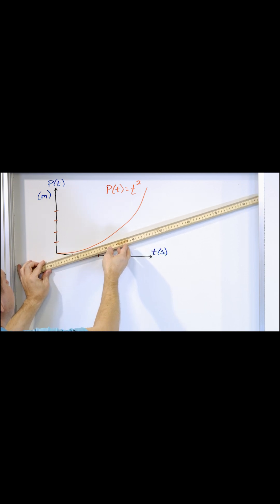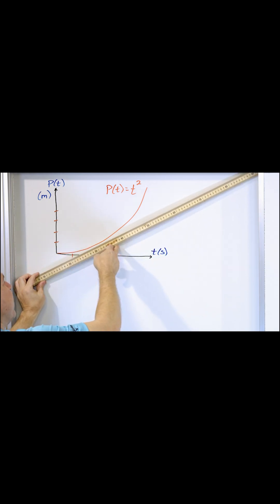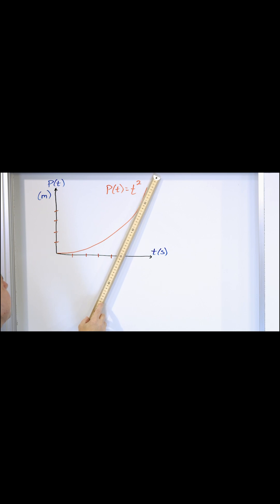As we go over here, the slope of the tangent line gets steeper and steeper. When it's over here, the slope of the tangent line, or the rate of change, is much steeper.